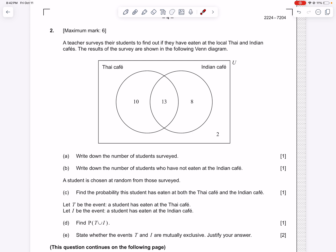Let's get started. So we're going to write down the number of students surveyed. In order to do that, all we have to do is add up all the numbers in our Venn diagram. So we have 10 plus 13 plus 8 plus 2. And whenever you see a question that says write down, you actually don't have to show work on the IB, but sometimes I do, just to be cautious.